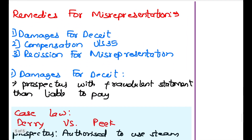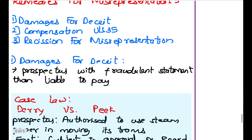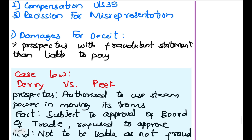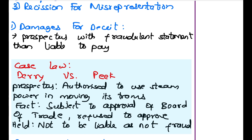The next concept is Remedies for Misrepresentation in a Prospectus. Since a prospectus is a really important document — people buy shares based on it — if someone misrepresents in a prospectus, the person buying shares could enter into a fraud. That is why shareholders and outsiders are given certain remedies. There are three remedies: Damages for Deceit, Compensation under section 35, and Rescission for Misrepresentation. For Damages for Deceit — if a director or owner makes any fraudulent statement in the prospectus, the director is personally liable to pay for it.